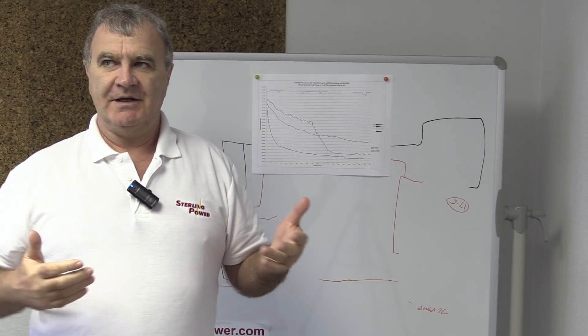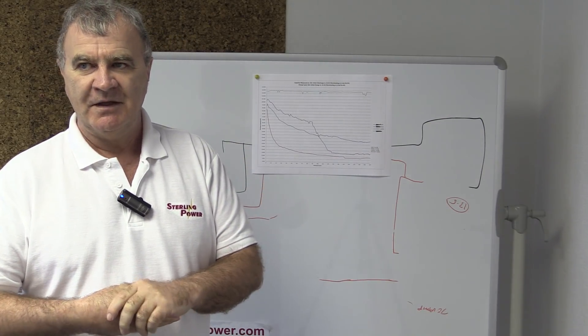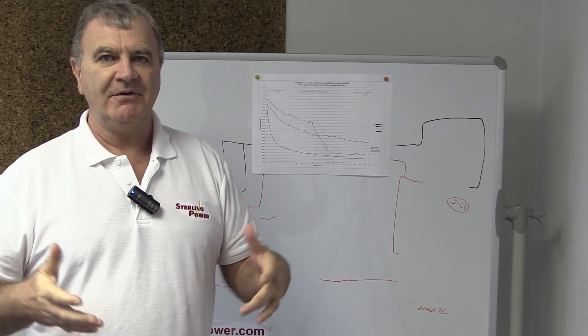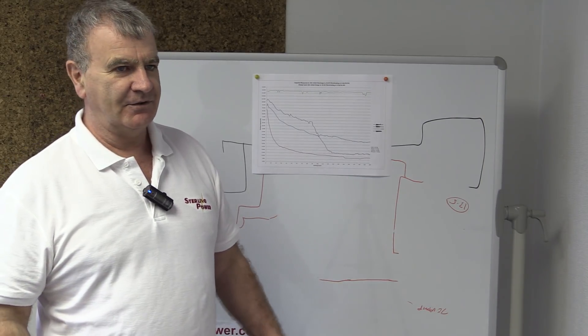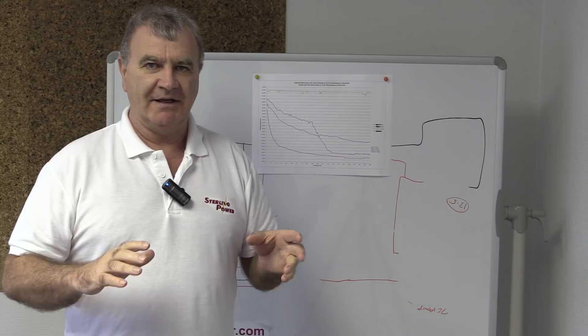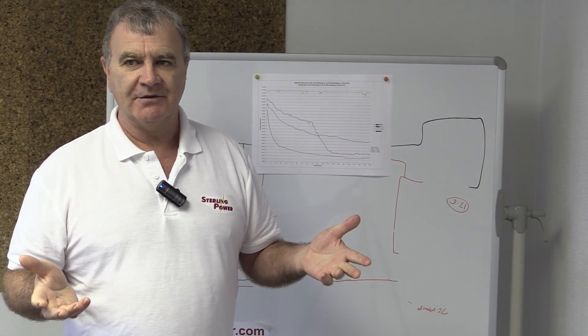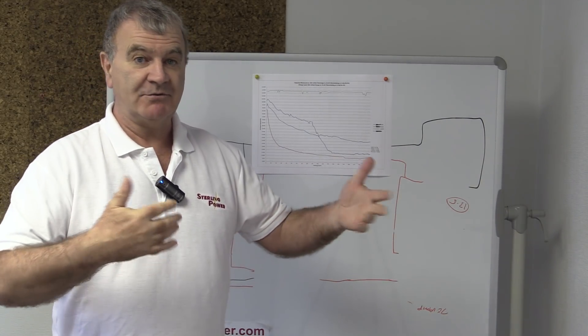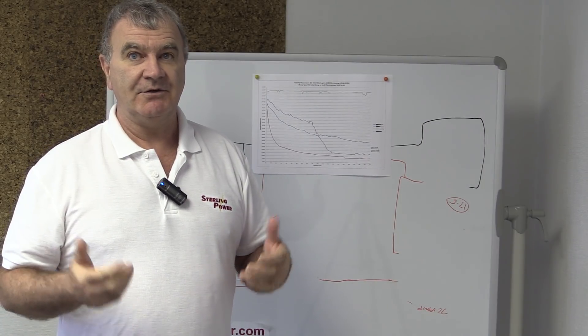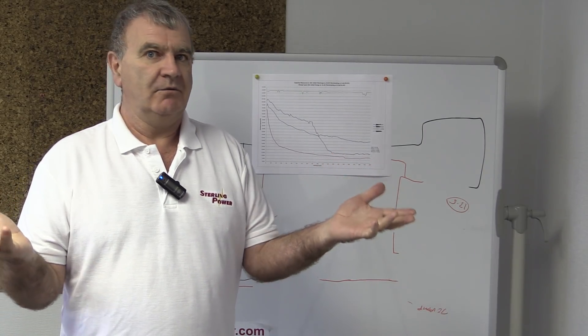This data would be aimed at someone like, for example, say you were a large company that had a fleet of vans and you had an inverter in the back of the van. And after three months, your batteries were being destroyed. And you're going, well, why would it do this?